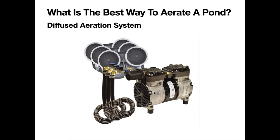Diffused aeration systems involve a land-based pump, weighted airline, and diffusers — the circular plates you see in the photograph sit at the bottom of the pond. This creates very fine bubble patterns rising from the bottom to the surface, breaking the surface tension of the water and allowing oxygen to come in at the surface. This action also circulates highly oxygenated water from the top to the bottom of the pond and all around, making it very effective at increasing dissolved oxygen levels throughout the entire water body.